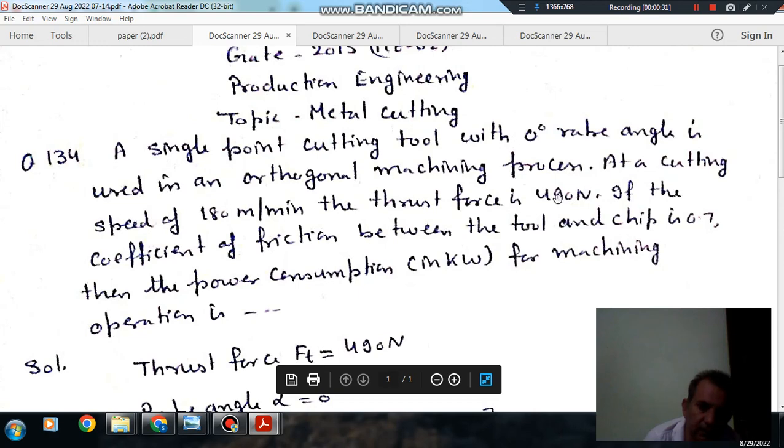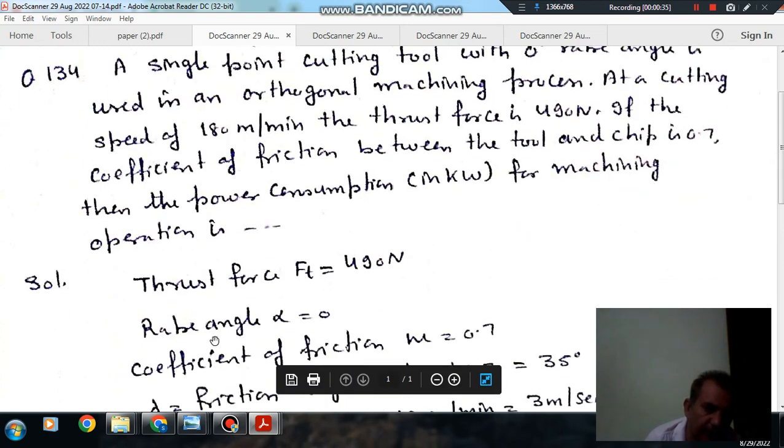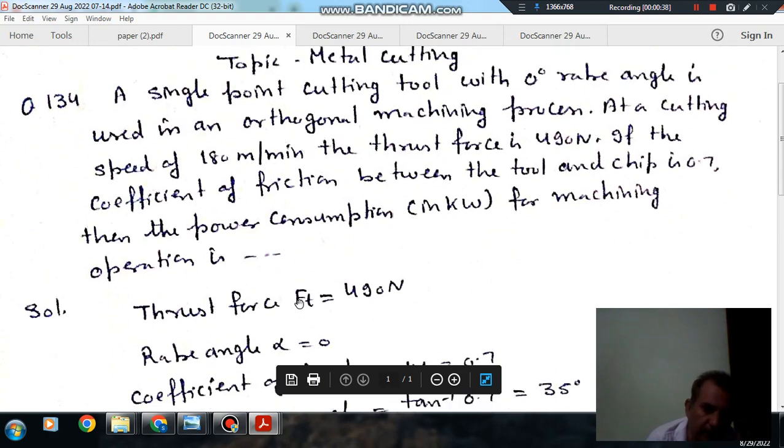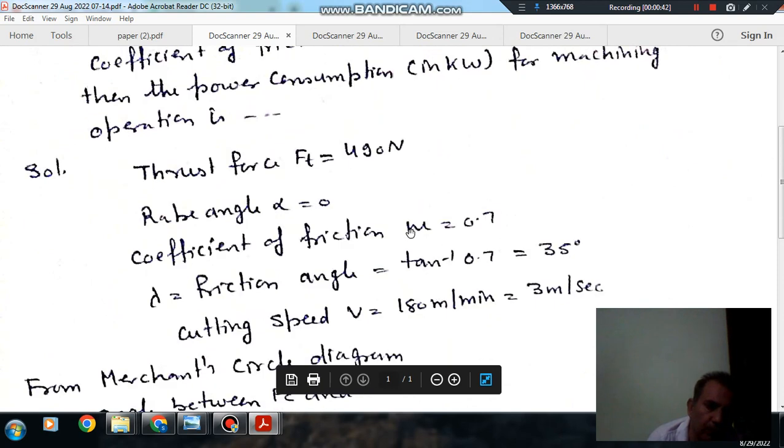So here the thrust force Ft is 490N and rake angle alpha is 0 degrees. These data are given and coefficient of friction is given as 0.7. So from the coefficient of friction, we can find out the friction angle lambda.